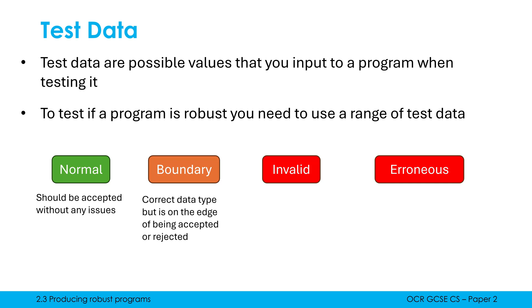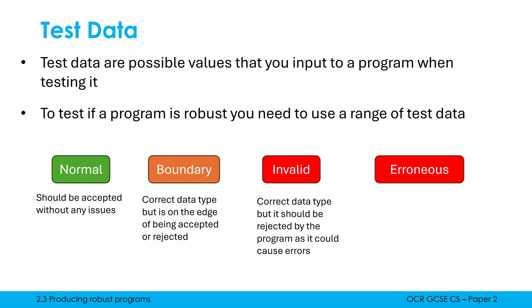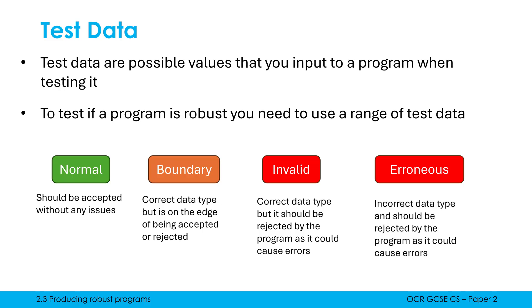Invalid and erroneous are two types which sound identical, so we have to differentiate them. Invalid is where it's the correct data type but should still be rejected by the program because it could cause errors — the user gets a message saying this is invalid, maybe it goes into a while loop or there's some validation. For example, if we're asking the user to enter a height (expected as a float), typing in minus 180.5 is a float but not valid, so it should be rejected. Erroneous, in contrast, is just completely wrong — it's the wrong data type entirely. For the height example, if they typed in 'potato', that is a string: wrong data type, wrong value, and could cause an error unless handled carefully.